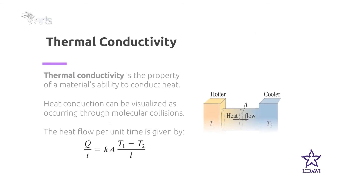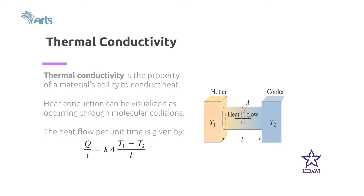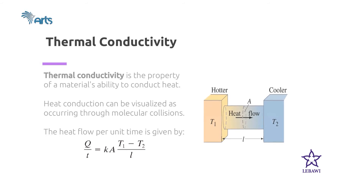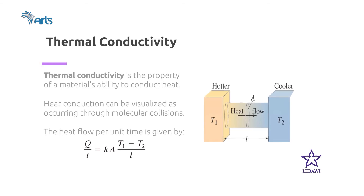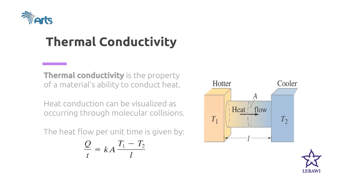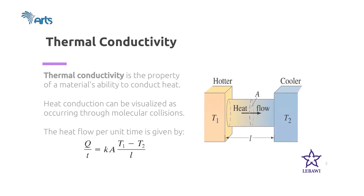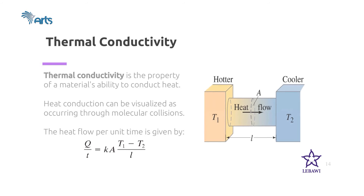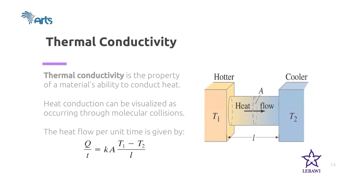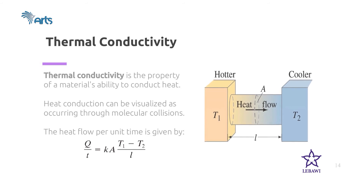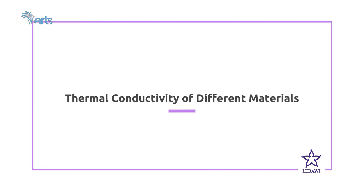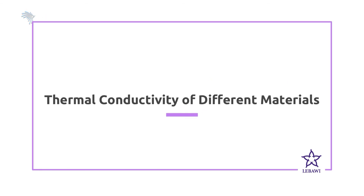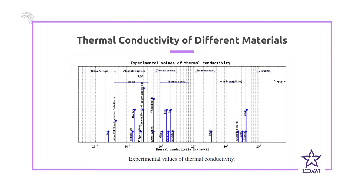From the diagram, we have hotter and cooler objects on the left and right hand side, connected by a conductor. Heat flows through the cross-sectional area, and the length of the cylindrical object, the cross-sectional area, and the type of material all affect the rate of heat flow. From the diagram, you can see experimental values of thermal conductivity — different materials have different thermal conductivities.